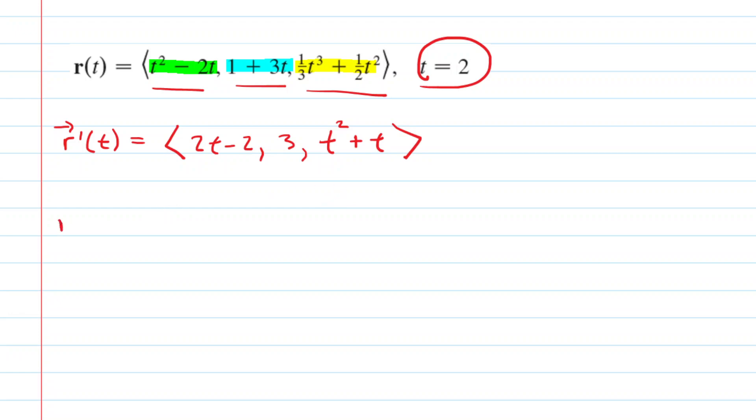And we need to evaluate the tangent vector at a specific t value of 2. So now we just plug in 2 for t. And then when we simplify, we will see that the x component is 2 times 2 is 4 minus 2 is 2. The y component is locked in at 3. And then the z component is going to be 2 squared. So 4 plus 2 is 6. So that is our tangent vector.